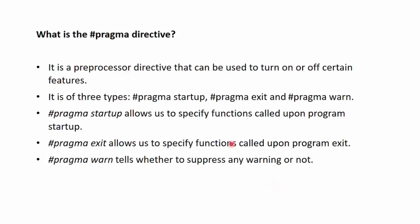Next question: what is the #pragma directive? It is a preprocessor directive that can be used to turn on or off certain features in a C program. It is of three types: #pragma startup, #pragma exit, and #pragma warn. #pragma startup allows us to specify functions to run upon program startup. #pragma exit allows us to specify functions to run upon program exit. #pragma warn tells whether to suppress any warnings in the C program or not.